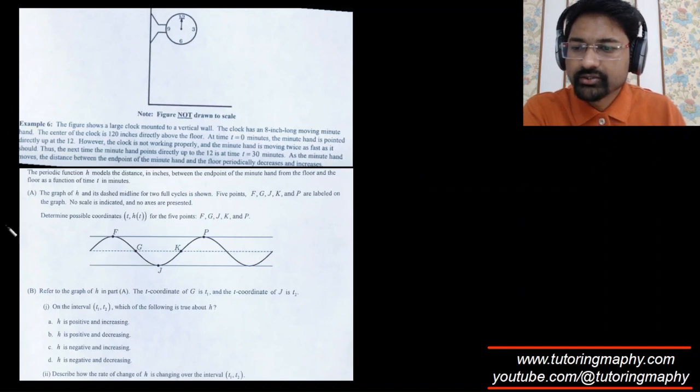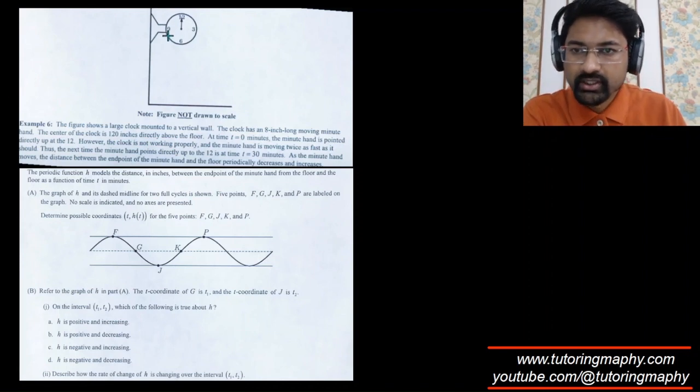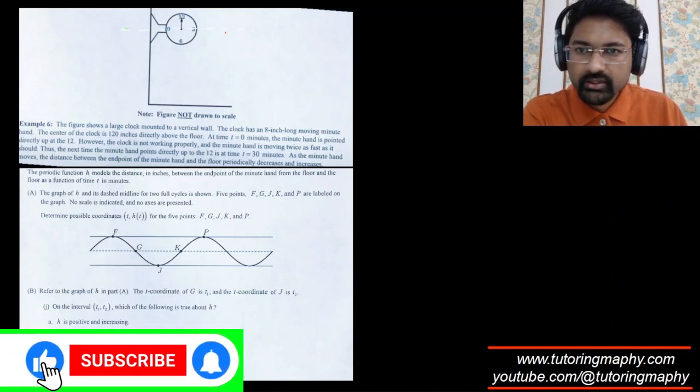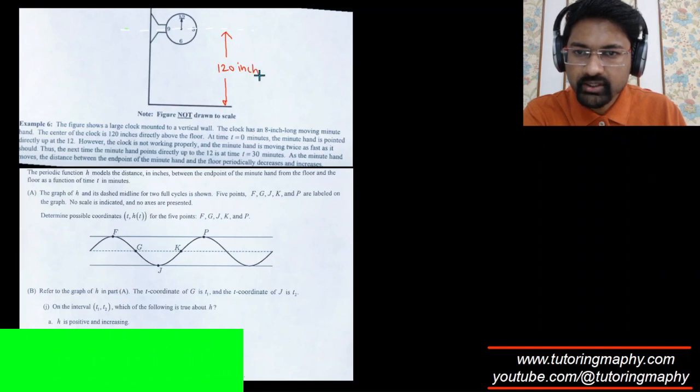Let's read this one out. It's about a wall clock. The figure shows a large clock mounted to a vertical wall. The clock has an 8-inch long moving minute hand, and the center of the clock is 120 inches directly above the floor.